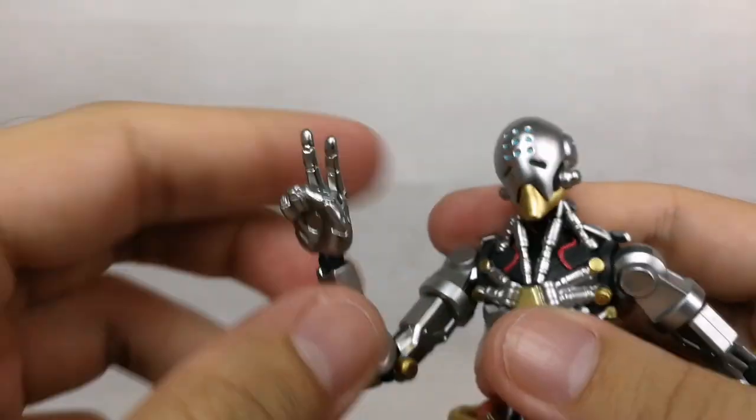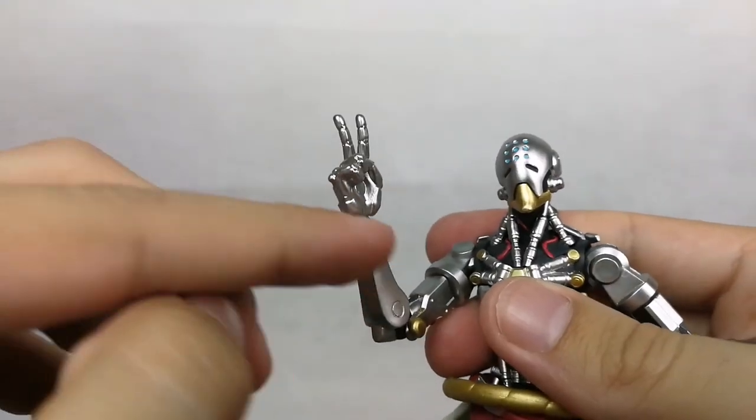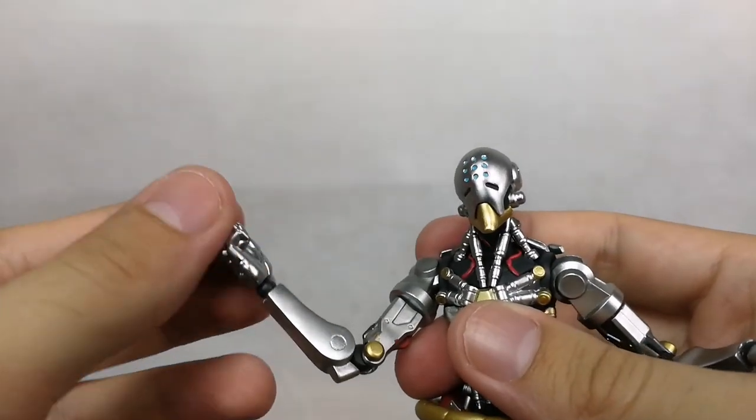So it allows us rotation on that bicep. And then of course we have a circular hinge on the elbow and a ball hinge on the hand.